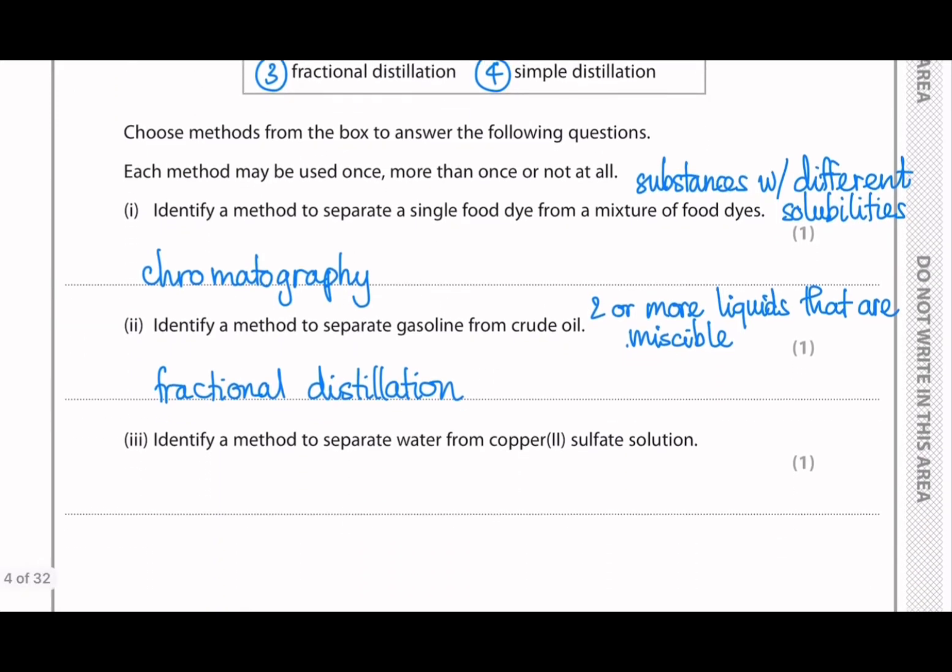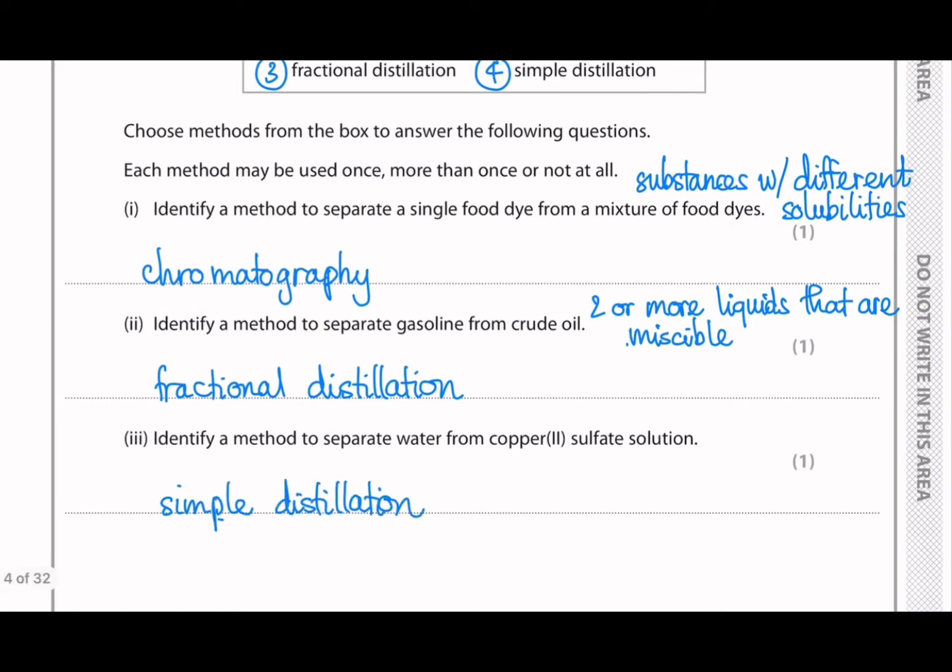And then the third prompt is identify a method to separate water from copper sulfate solution. And the answer is simple distillation. Because water is a liquid that is being separated from copper sulfate, which is a soluble solid in a solution.